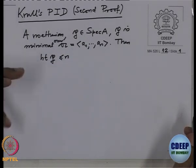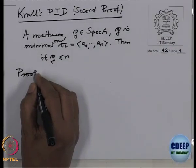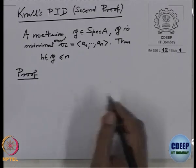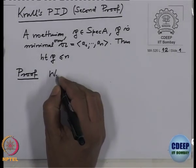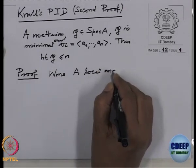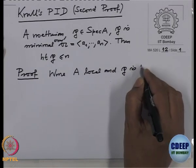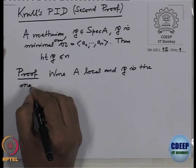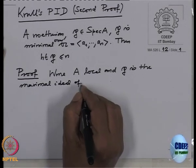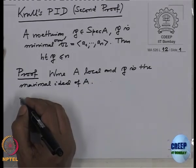In the literature people keep calling it the principal ideal theorem only. So we are going to prove this. As in the earlier case, we may assume A is local and P is the maximal ideal of A. And again I will prove by induction on N.